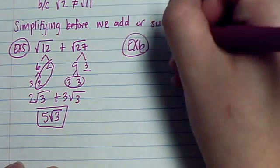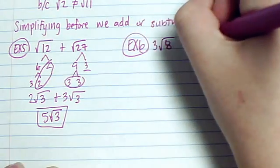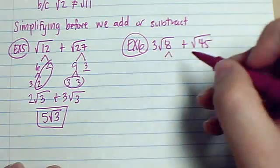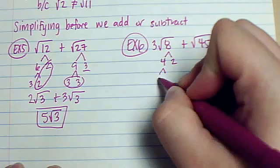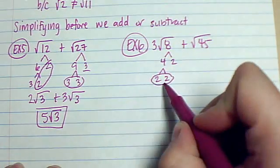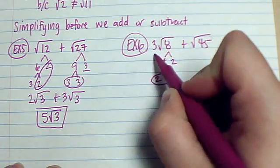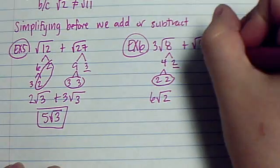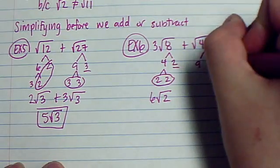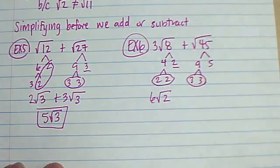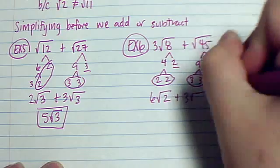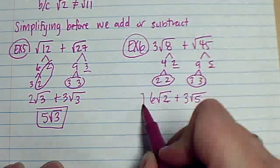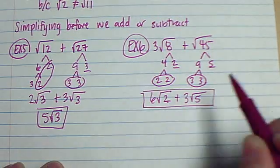Example 6: 3 root 8 plus root 45. Let's simplify. Root 8 becomes 4 times 2; 4 is 2 times 2 — circle my pair. I take out a 2 and multiply it by the 3 already out front: 3 times 2 is 6, and the single 2 stays in, giving 6 root 2. For root 45: 9 times 5, and 9 is 3 times 3 — take out a 3, single 5 stays in, giving 3 root 5. Now 2 and 5 are not the same, so 6 root 2 plus 3 root 5 is just my answer — I can't go any further.